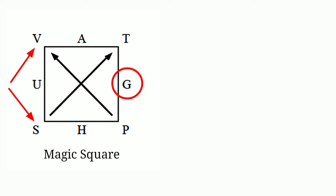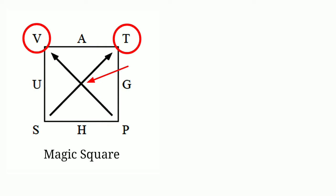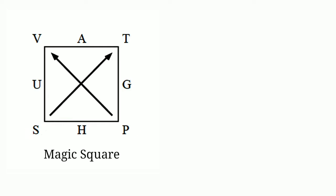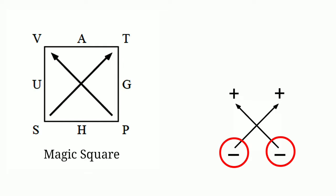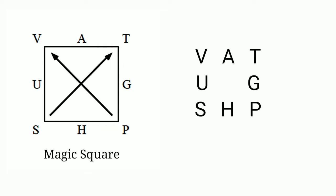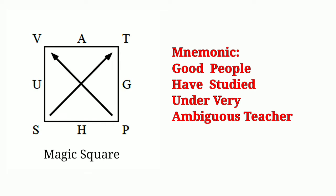The conjugate variables occupy opposite ends of each diagonal and the crossed arrows point upward toward volume V and temperature T, and away from entropy S and pressure P. The arrow heads are assigned to have positive charge while the arrow tails are assigned to have negative charge. To remember this you can remember the sequence VAT UG SHP, or you can remember the mnemonic: Good People Have Studied Under Very Ambiguous Teacher. Isn't it interesting?